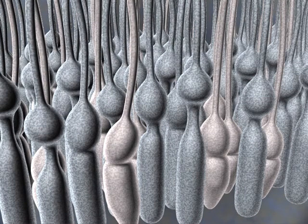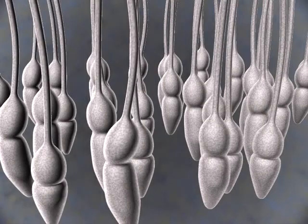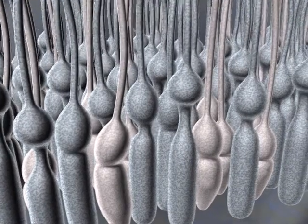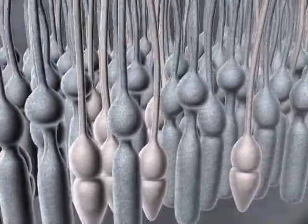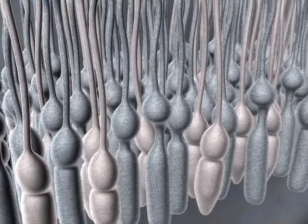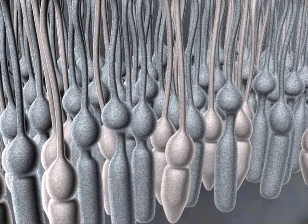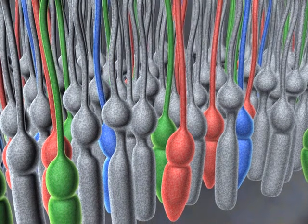There are two different types of photoreceptors, rods and cones. The rods are sensitive to low levels of light, so are needed for night vision. They are also sensitive to movement. The cones need higher levels of light, but can distinguish fine detail and colour. Different cones are sensitive to different wavelengths of light.